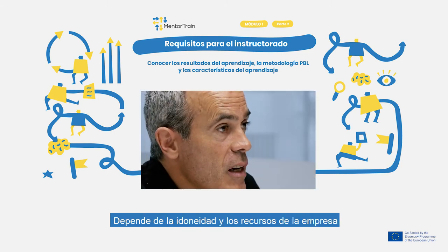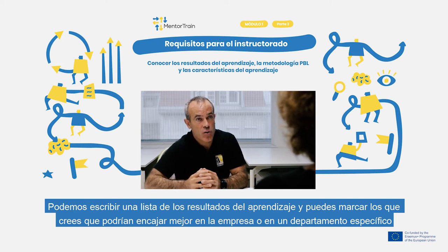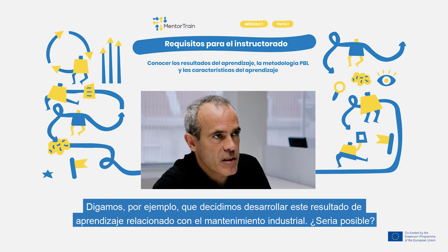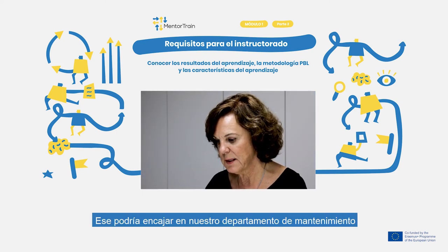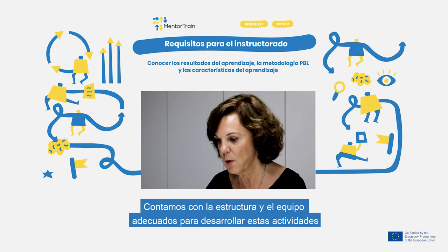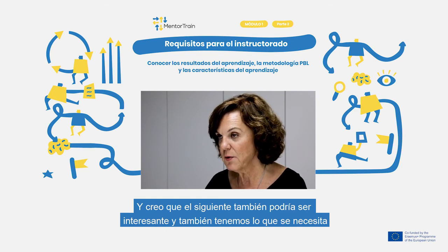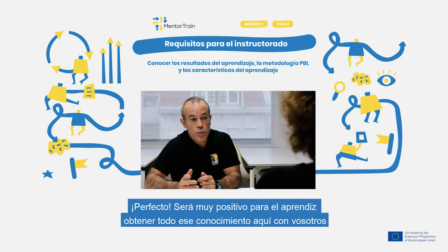Okay, and according to that, which learning outcomes do you think the apprentice should develop with us? It depends on the suitability and resources of your company. We can write a checklist with the different learning outcomes and you can tick the ones you think fit better in your company. Let's say for example that we decide to develop this learning outcome related to industrial maintenance. What do you think? I think that one could fit at the maintenance department — we have adequate structure and equipment for developing these activities, and I think the next one could also be interesting. Let's write that checklist you mentioned.